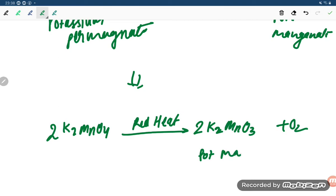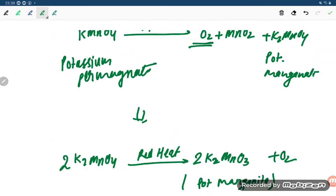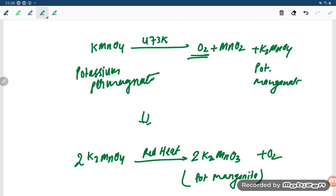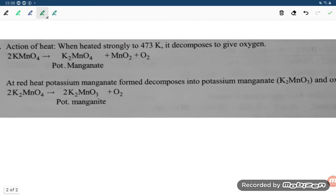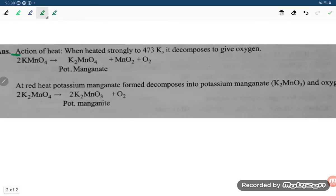Potassium manganite. When you are heating at different temperatures, it gives different products. The basic product is oxygen. Let us read the slide: Action of heat - when heated strongly to 473 Kelvin, it decomposes to give oxygen. 2 KMnO4 gives K2MnO4 plus MnO2 plus O2.